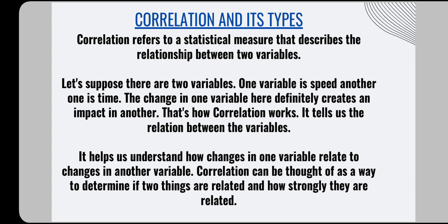That's how correlation works — it tells us the relation between variables. It tells us how the change in one variable creates an impact on another, how strong or how weak that effect is. It is basically a statistical measure that describes the relationship between two variables, specifically how a change in one variable impacts the other variable.